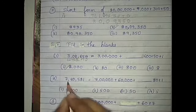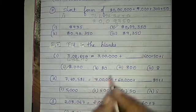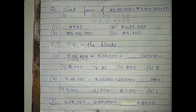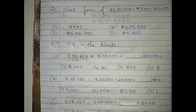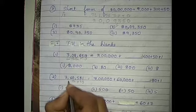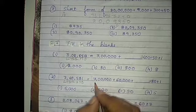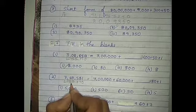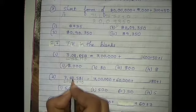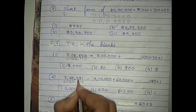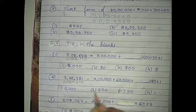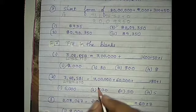Next, the second one: 7,60,581 is equal to 7,00,000 plus 60,000 plus dash plus 80 plus 1. We label the places: ones, tens, hundreds, thousands, ten thousands, and lakh. Here 7 is at the lakh place, so the place value of 7 is 7 lakh. Next number is 6 at the ten thousand place, so the place value of 6 is 60,000. Next number is 0 — we can leave 0. Next we take 5 at the hundreds place, so the place value of 5 is 500. The second option is correct — we have to choose 500.